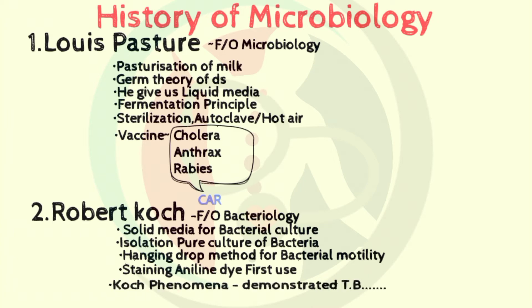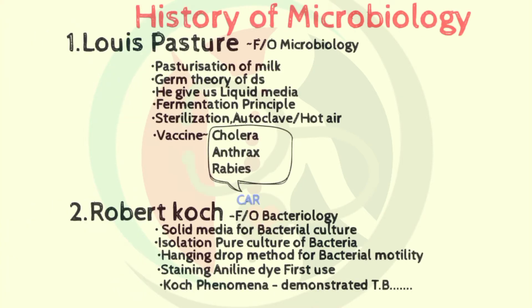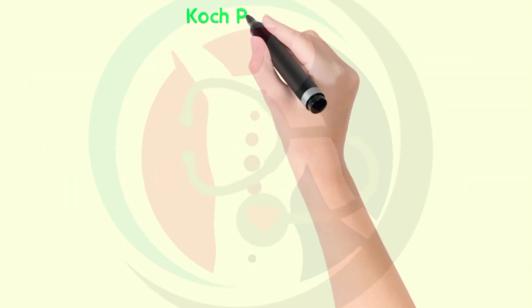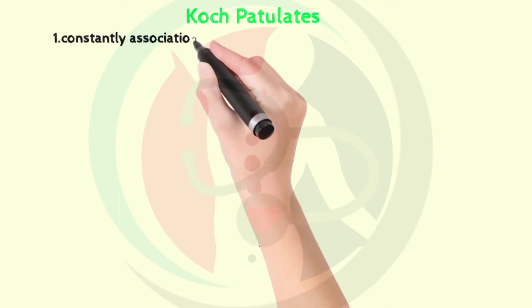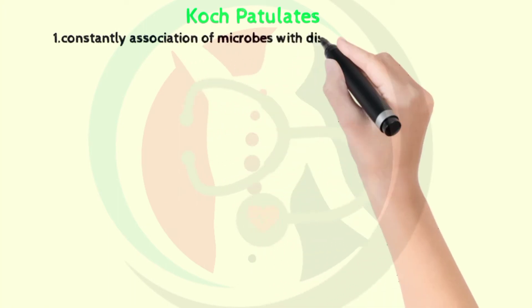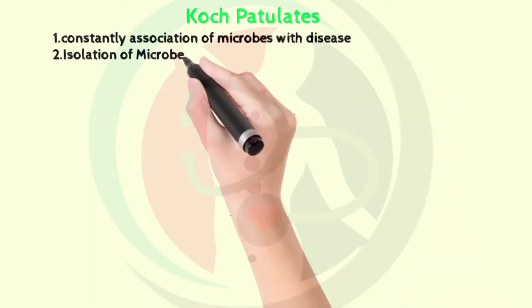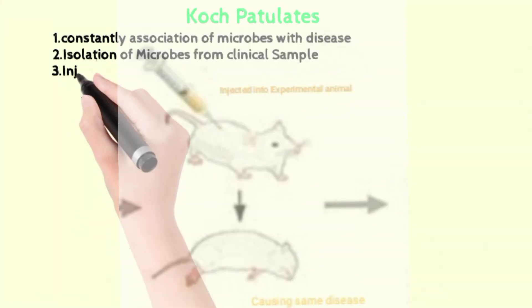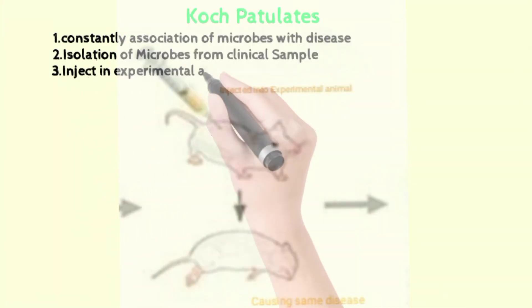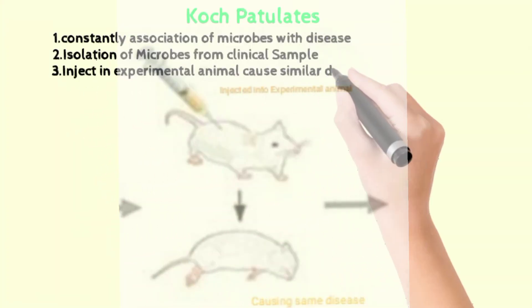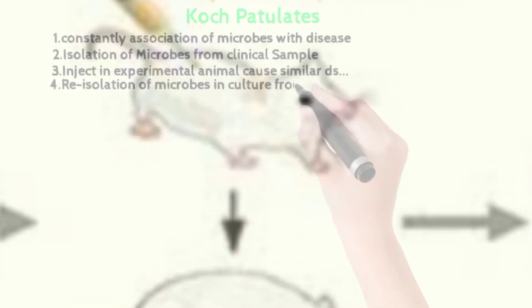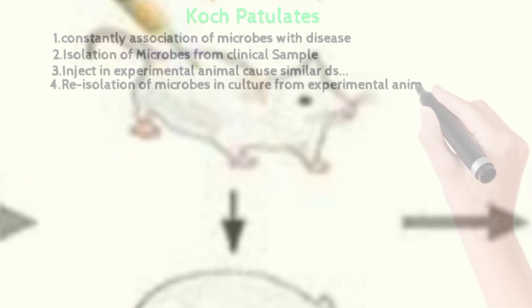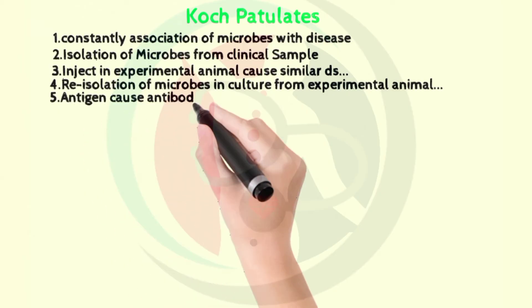Now we will study Koch's postulates, developed in the 19th century by German physician Robert Koch to identify the pathogens causing disease. In Koch's postulates: there should be constant association of microbes with disease; isolation of microbes from a clinical sample and injection into an experimental animal; re-isolation of microbes in culture from the experimental animal; and that antigen causes antibody production in the body.